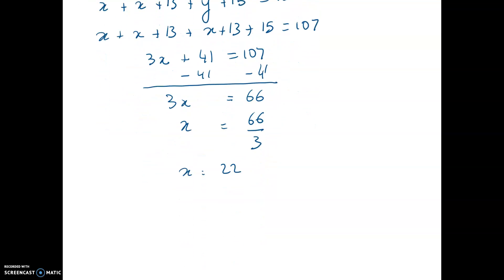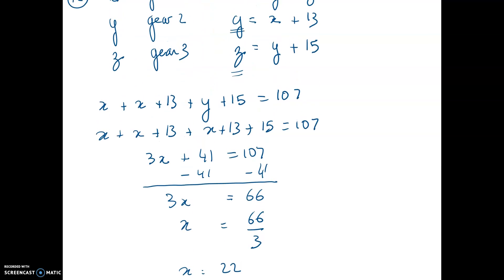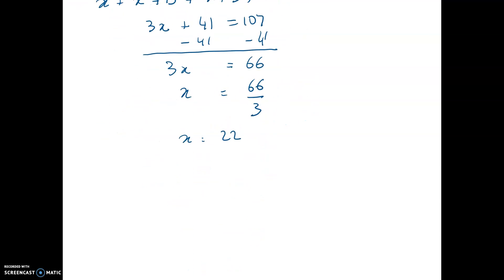So now, in order for me to find Y, well, I know that Y equals X plus 13. So Y equals 22 plus 13, which gives me 35. And I know that Z equals Y plus 15, which is 50.